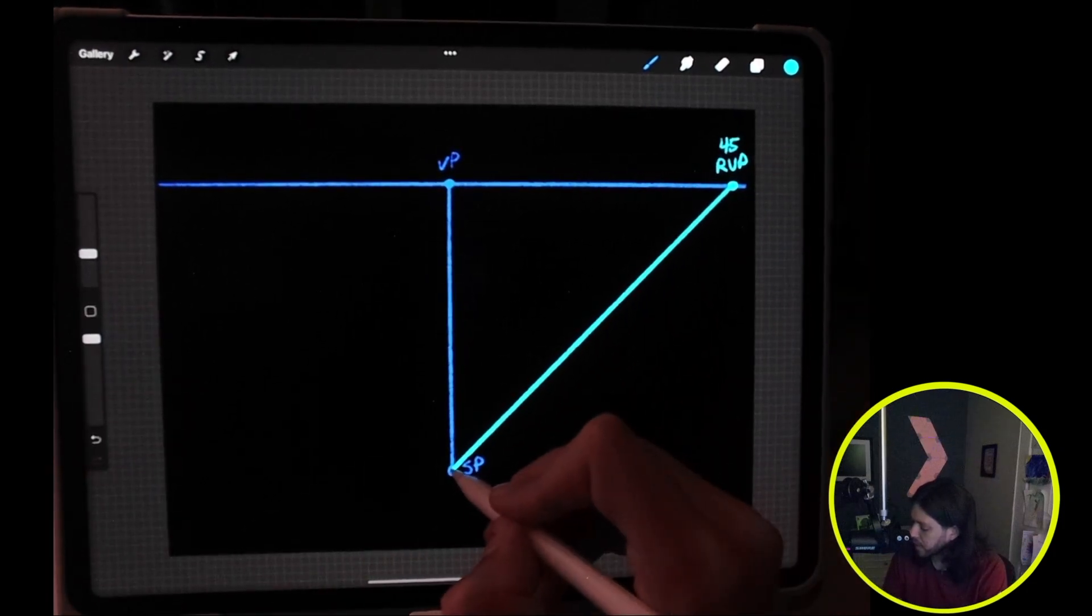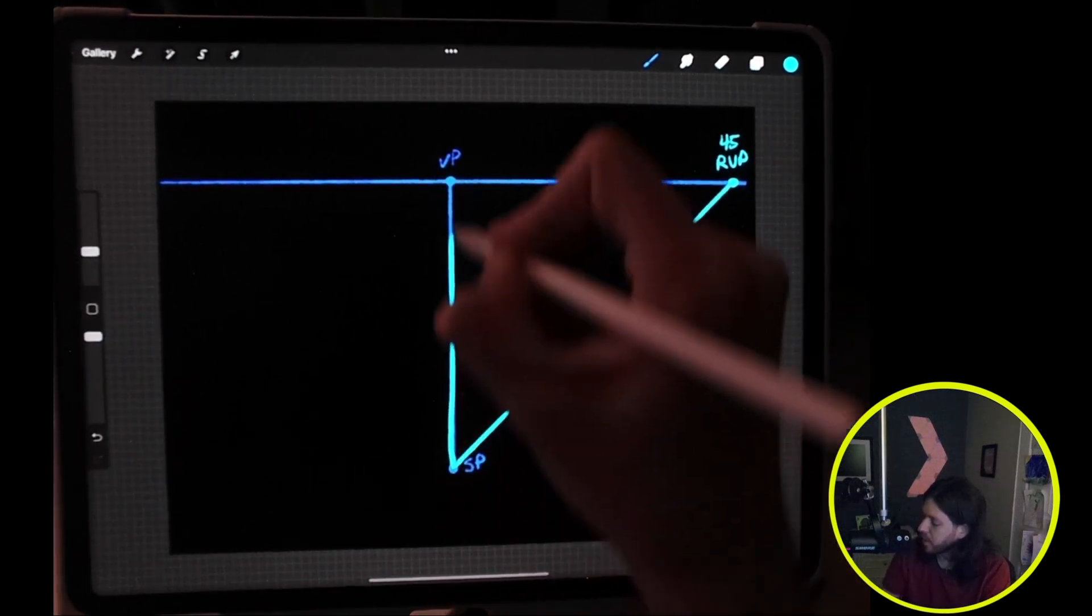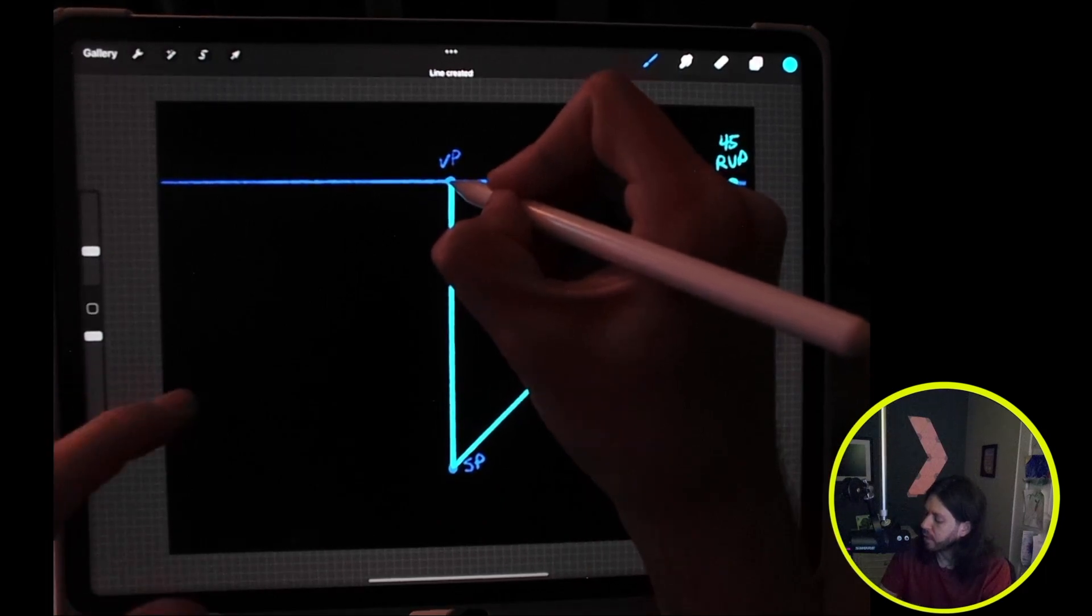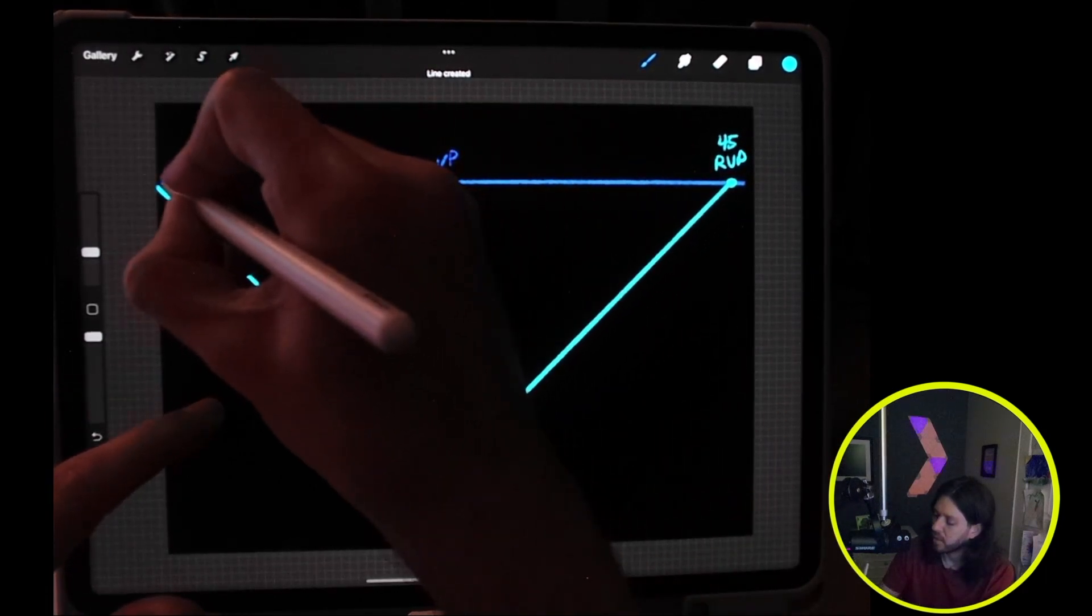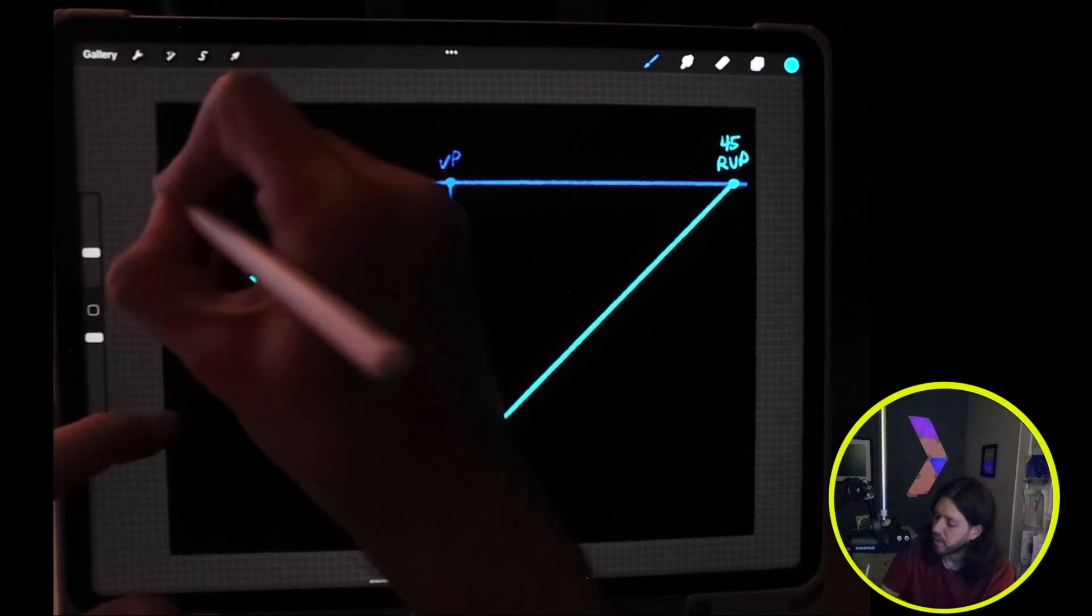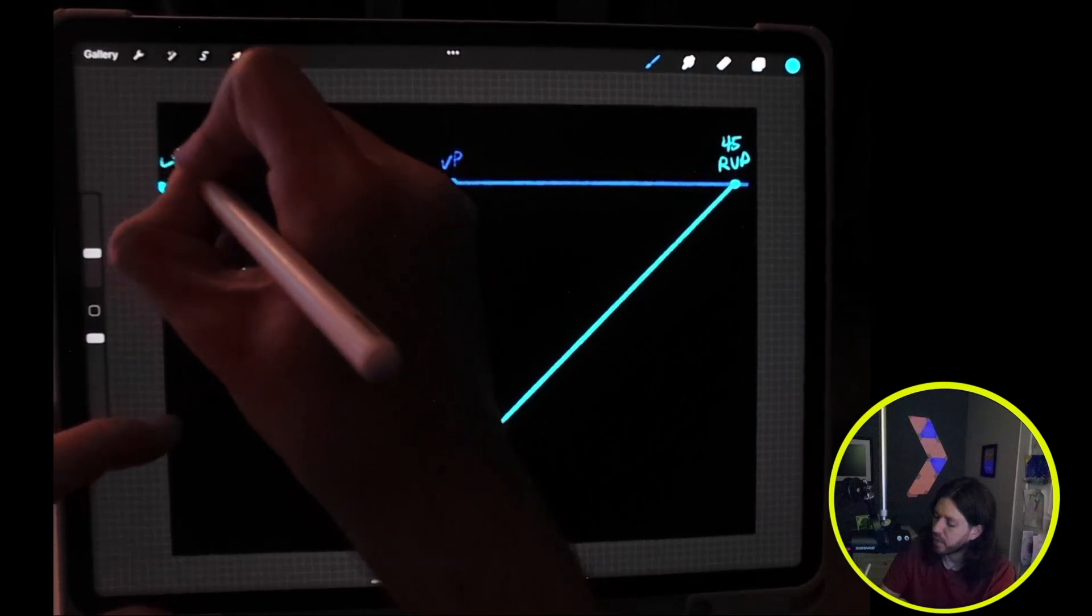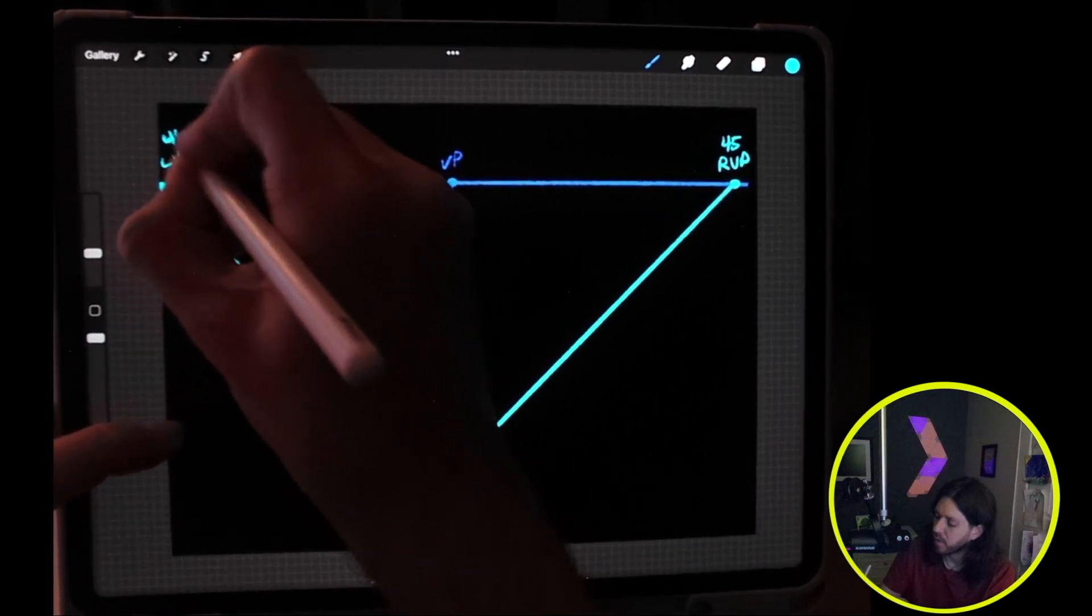Now let's go ahead and do the same thing. Start here at the station point and do a 45-degree angle, and this will be our left vanishing point at 45 degrees.